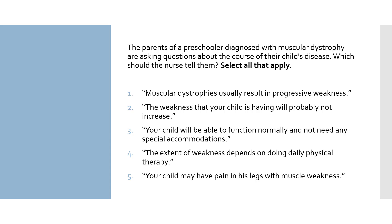The parents of a preschooler diagnosed with muscular dystrophy are asking questions about the course of their child's disease. Which should the nurse tell them? Select all that apply. Number one: muscular dystrophies usually result in progressive weakness. Number two: the weakness that your child is having will probably not increase. Number three: your child will be able to function normally and not need any special accommodations. Number four: the extent of weakness depends on doing daily physical therapy. Number five: your child may have pain in his legs with muscle weakness. Determine which answer gives the correct information about the progression. All the information in the answer must be true for it to be correct. Watch out for answers that only have partial truths. This is a select all that apply question, so look at each answer individually and decide if it fits the question.